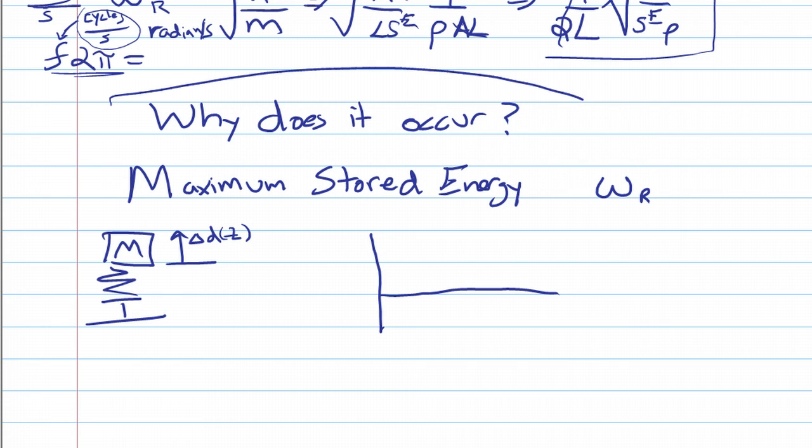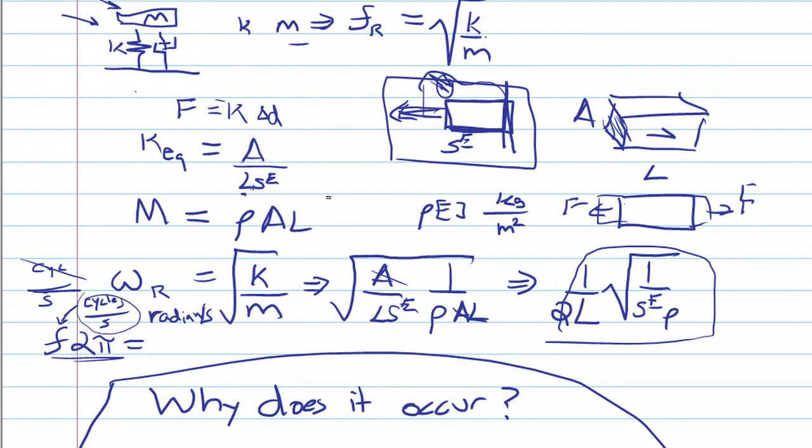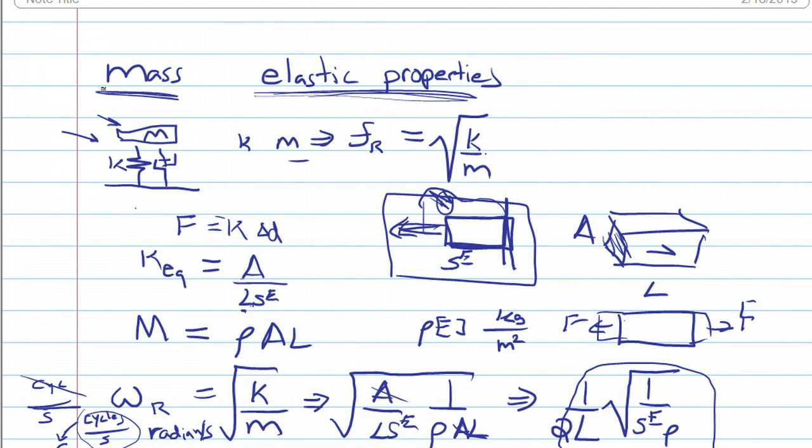Well actually, we'll go on to this next lesson. So this is the kind of introduction to the next video. Why does this resonance frequency occur? Because we kind of figured out how to measure it. We know what it depends on—it depends on two factors: it depends on the mass, and it depends on the equivalent elastic properties.